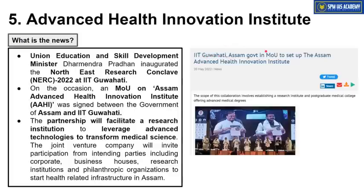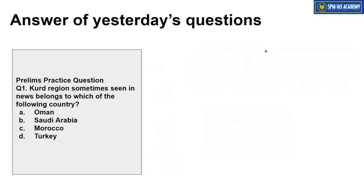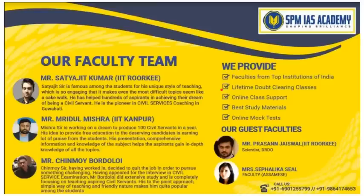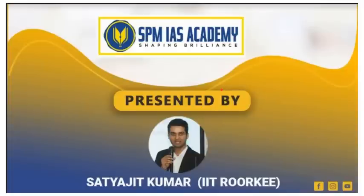Looking at yesterday's practice question answers: the Kurd region is in association with Turkey, and the Stockholm Convention is associated with persistent organic pollutants. That's all from our side for today. Thanks for watching.